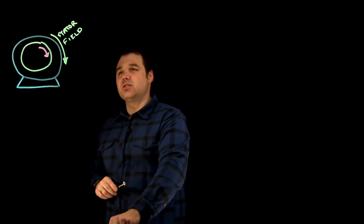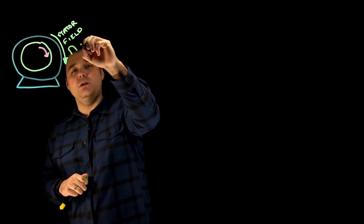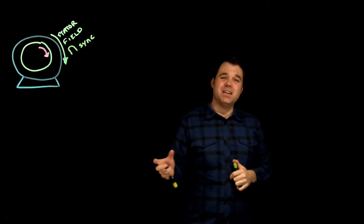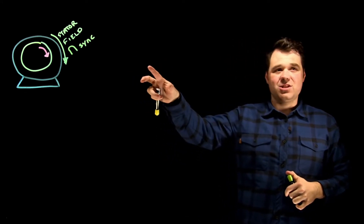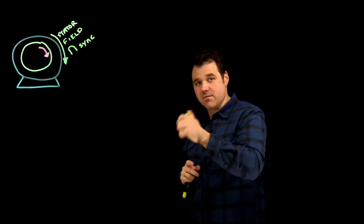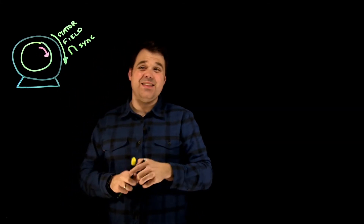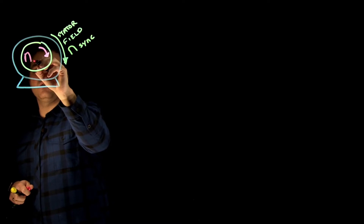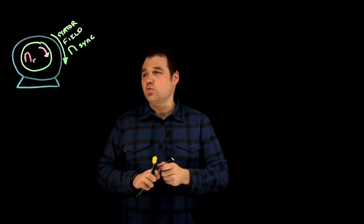When we have our stator rotating magnetic field, we know that is our synchronous speed — it's the synchronous speed, or the speed of the rotating magnetic field in the stator. Then our rotor will be spinning, and that's our rotor speed. You can represent that usually just as N, or N-rotor, whatever it is.